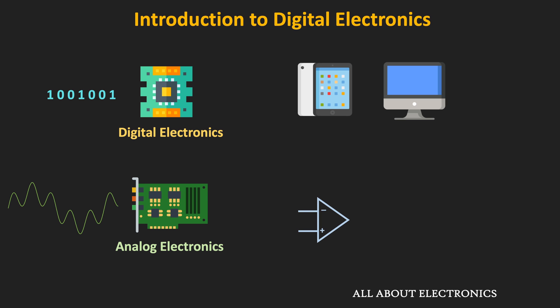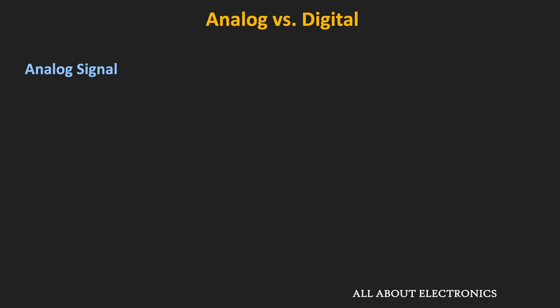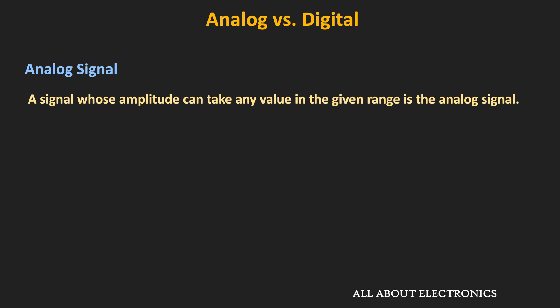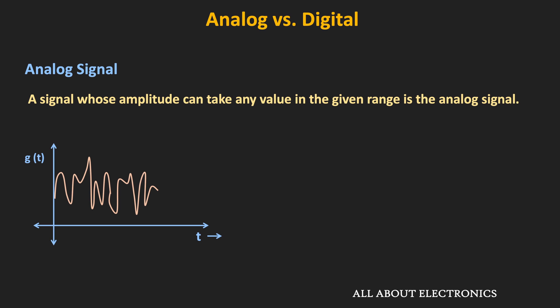Before understanding Digital Electronics, we should be very clear about analog and digital signals. An analog signal is a type of signal whose amplitude can take any value in the given range. For example, a voice signal is an analog signal. A signal at the output of an amplifier can take any value in the range of 0 to 10V — meaning there are infinite possibilities in the given range.